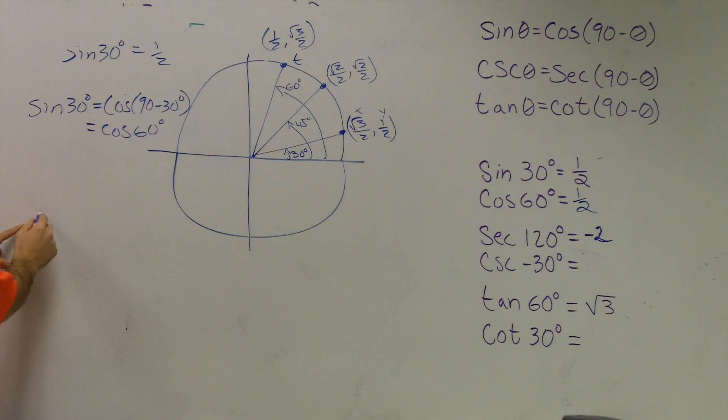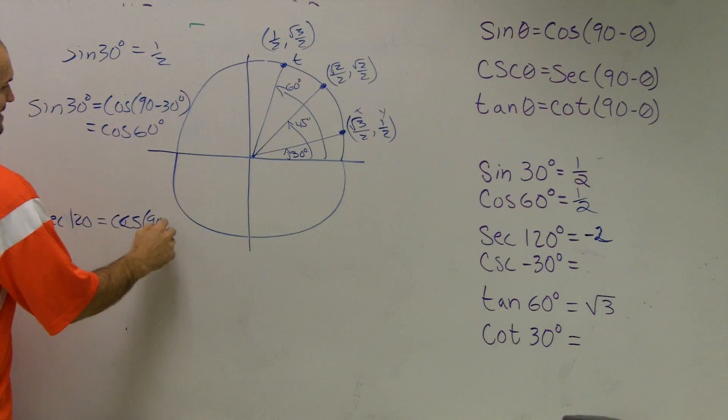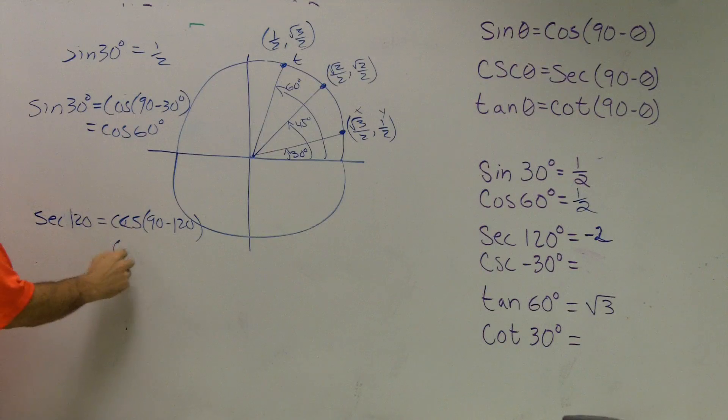So, I say secant of 120 is the same thing as cosecant of 90 minus 120, which is cosecant of negative 30 degrees. Well, what was the secant of 120?